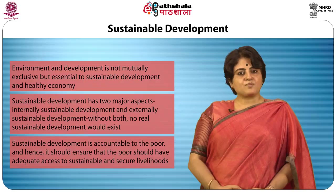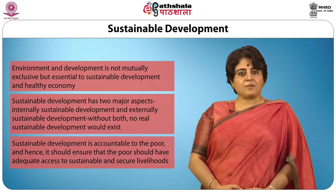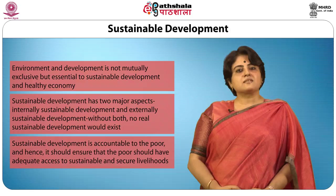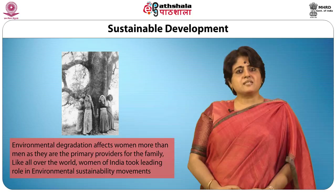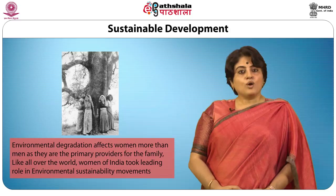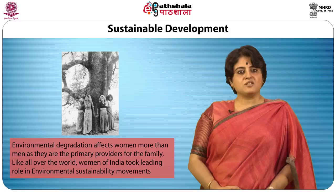Sustainable development has two major aspects: internally sustainable development and externally sustainable development, and without both, no real sustainable development could exist. It is accountable to the poor and must ensure adequate access to sustainable and secure livelihoods. Environmental degradation affects women more than men as they are the primary providers for the family. Like all over the world, women of India took a leading role in environmental sustainability movements — the Narmada and Chipko movements being self-explanatory examples.